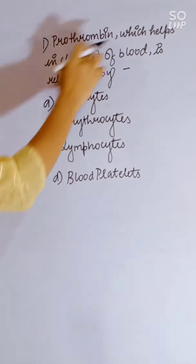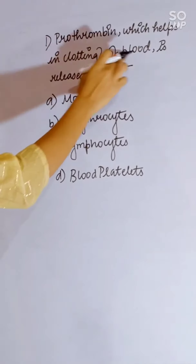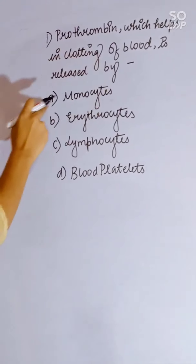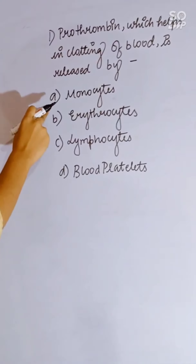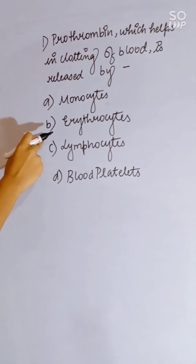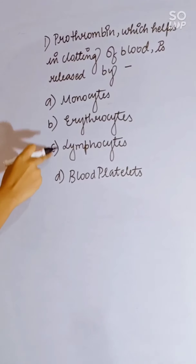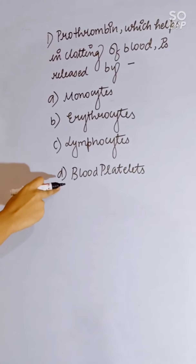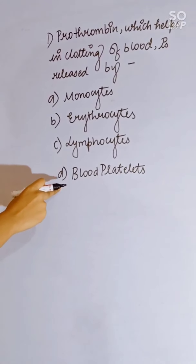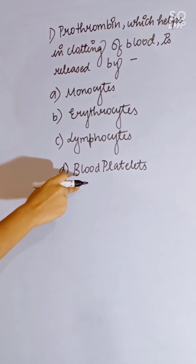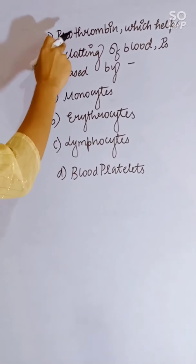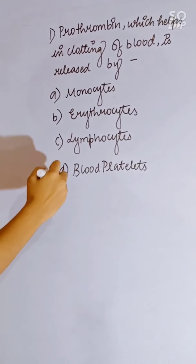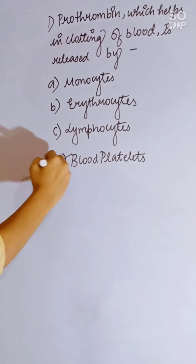Prothrombin, which helps in clotting of blood, is released by: monocyte, erythrocyte, lymphocyte, or blood platelets. Blood platelets release prothrombin. Correct answer is D, blood platelets.